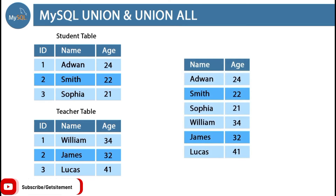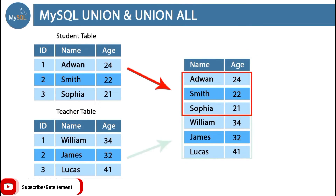Something like this. Here you can see our first three results came from the student table and our last three results came from the teachers table. And this kind of result is possible by using the UNION ALL command. Basically, UNION ALL is going to join two different table queries and return a combined result.